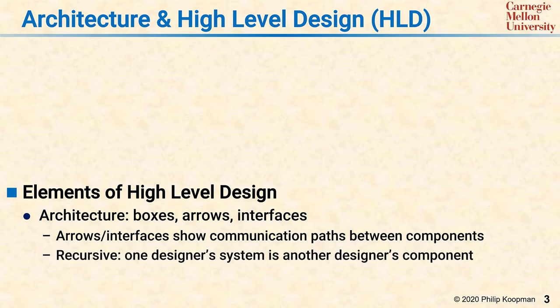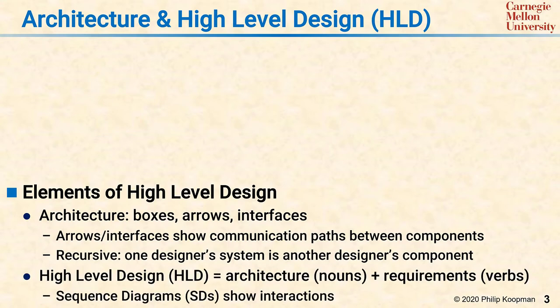Architecture tends to be recursive. One designer's system is another designer's component that gets used in an even bigger system. The high-level design document output by this process includes an architecture which provides nouns in the context of the requirements, which provides the verbs. Once you have nouns plus verbs, you understand what objects are supposed to perform what actions. A concrete way to represent this is using sequence diagrams to show the interactions between components in the system.